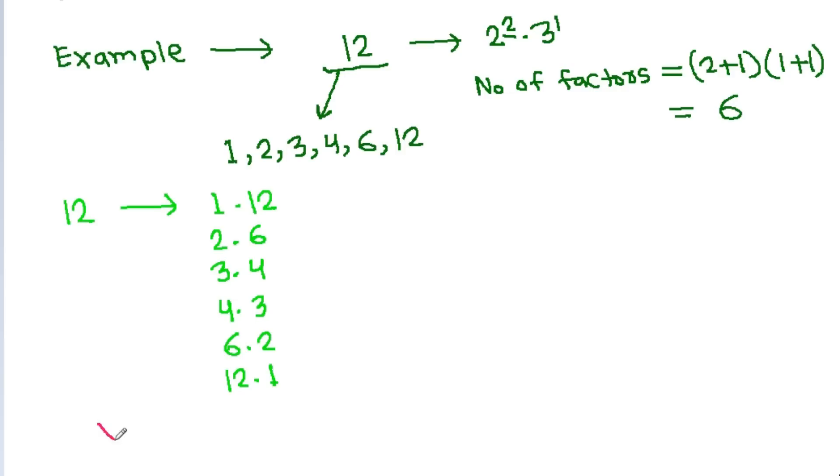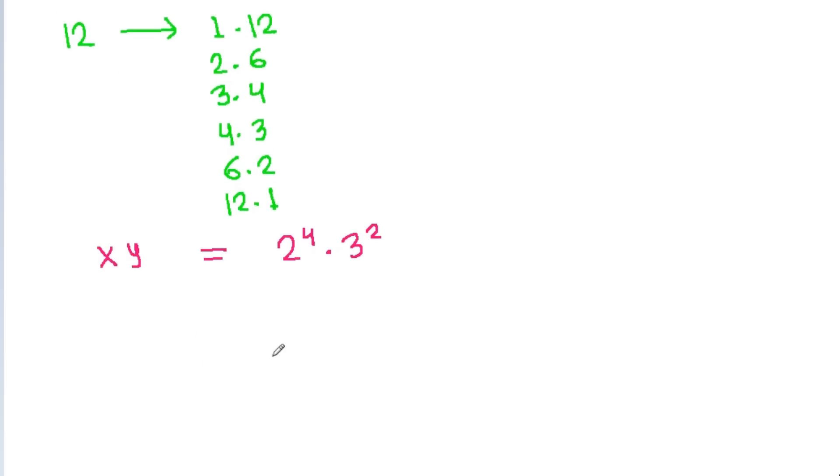For our problem, xy = 2^4 × 3². The number of factors is (4+1)(2+1) = 5 × 3 = 15.